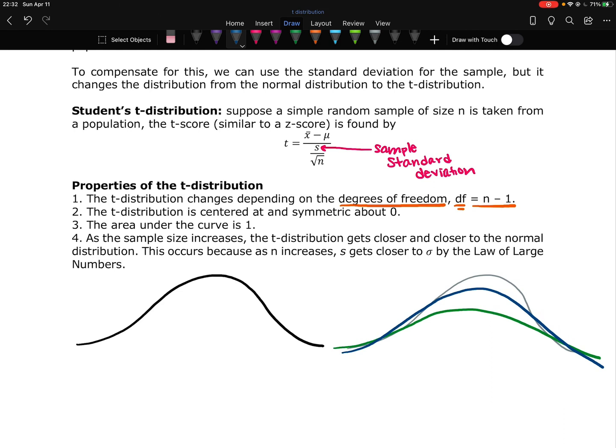Otherwise, the t-distribution is centered and symmetric at zero. Remember, zero is the z-score or now t-score for the mean. If you're at the mean, then your t-score is zero. The entire area under the curve is one. So we can interpret that area like probability, just like we did with the normal curve.